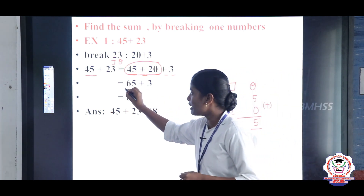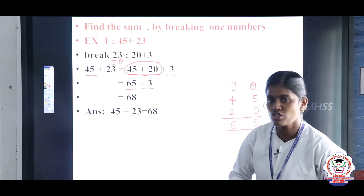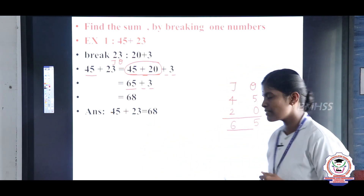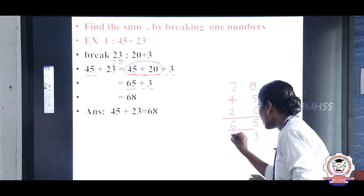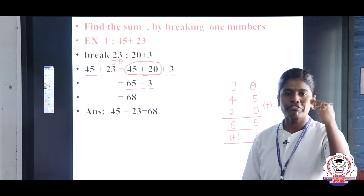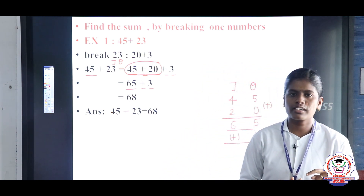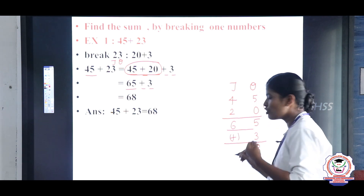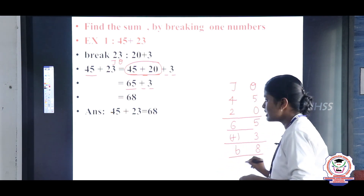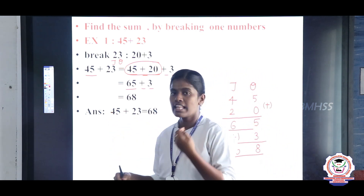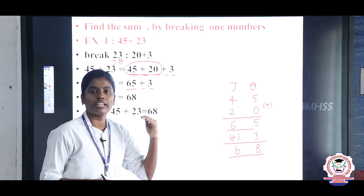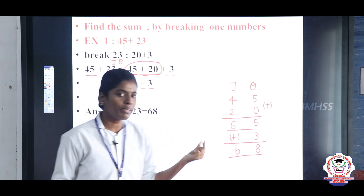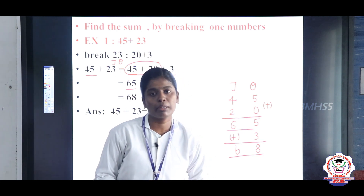Now write 65 plus 3. We have a single digit number in ones place. Add: 5 plus 3, keep 5 in the mind and 3 in the finger — 6, 7, 8 — the answer is 8. There is no number left, simply bring down 6. So the final answer is 68. The question 45 plus 23 equals 68. Topic: find the sum by breaking one number.